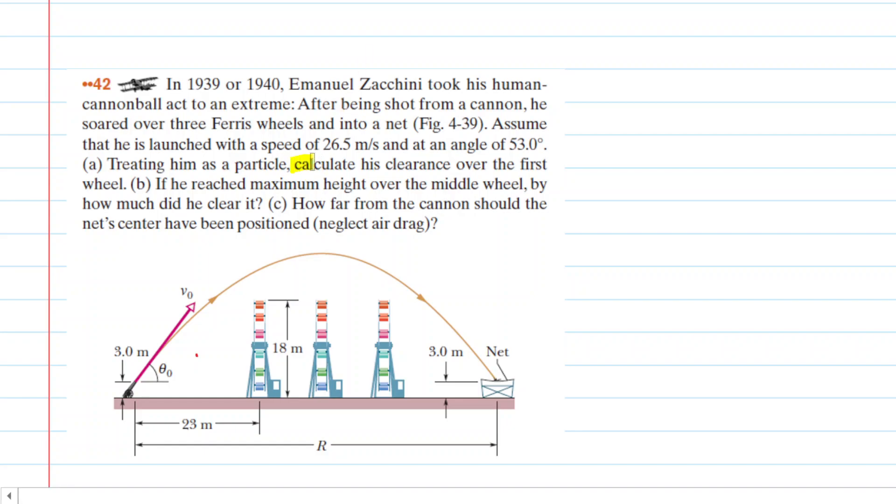In part A of this question, we have to calculate the acrobat's clearance over the first wheel. Let's consider the acrobat at this point in his trajectory. The clearance above the first wheel would be this distance right here. We're going to call that C for clearance.